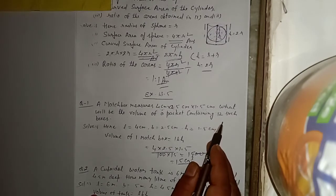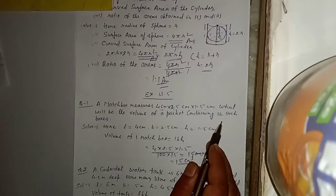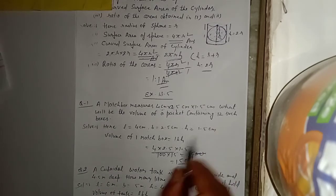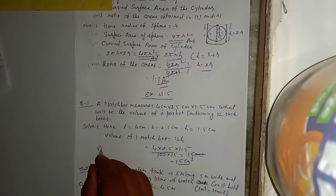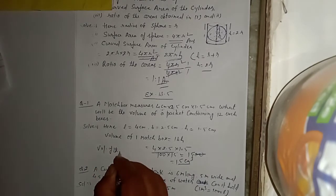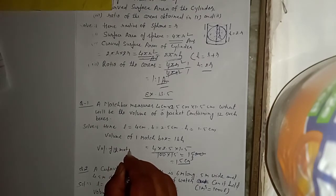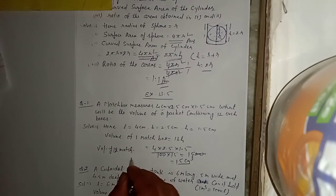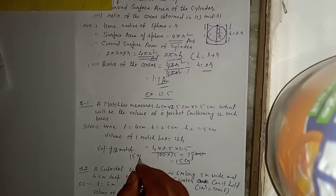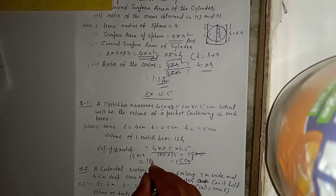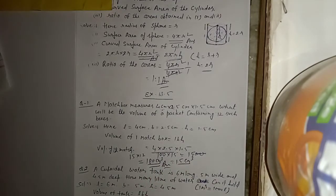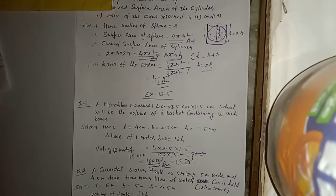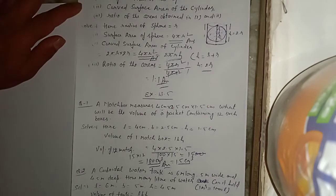12 matchboxes का volume कितना होगा? Volume of 12 matchboxes = 15 × 12 = 180 cm³। यानि volume of 12 matchboxes = 180 cm³। अब question number 2।